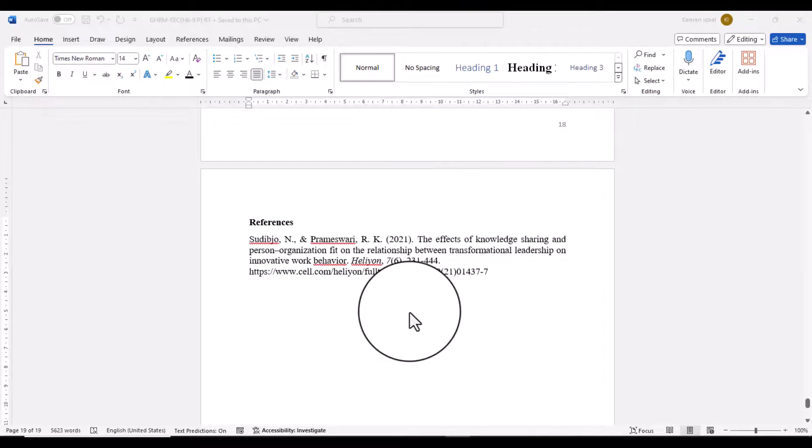For instance, in this case we can simply write down the URL where we have found this article. So these are the five strategies which you can use to trace out DOI number. I hope this video will be helpful. Thanks for watching.